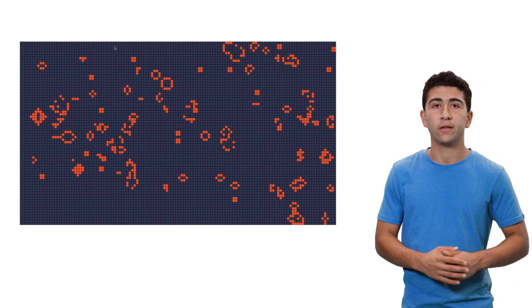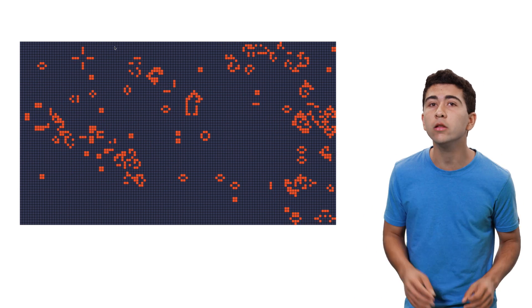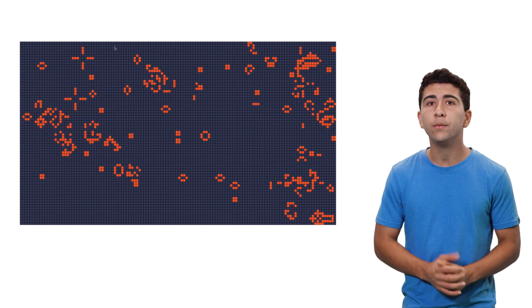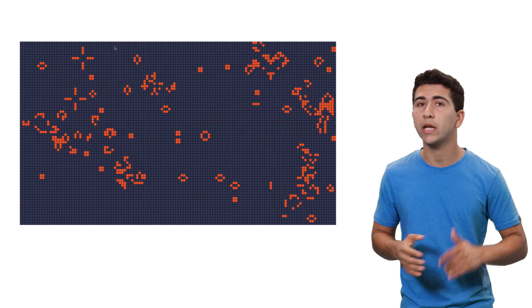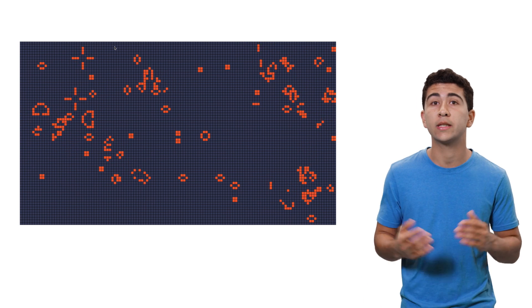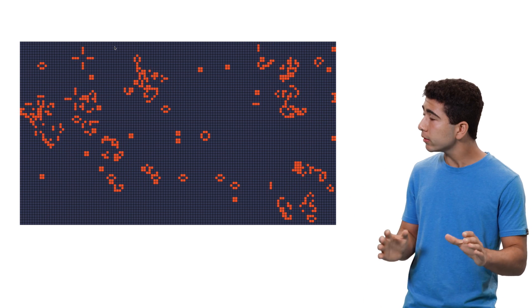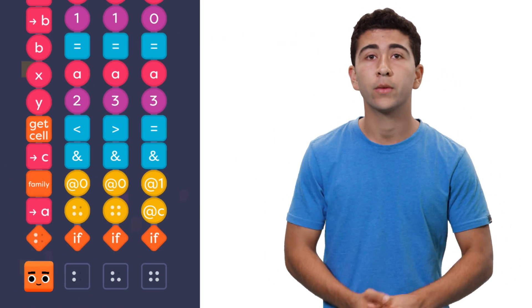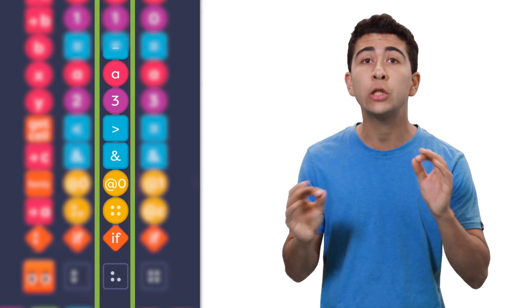Take a look at this P5 simulation, for example. It's called a cellular automaton. Basically, each cell is governed by a simple set of rules based on the past values of the cells around it. This particular automaton is called Conway's Game of Life.